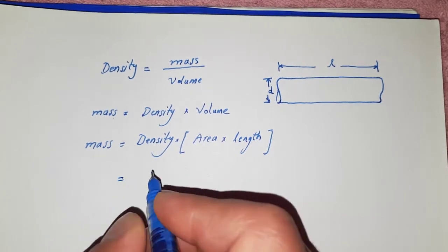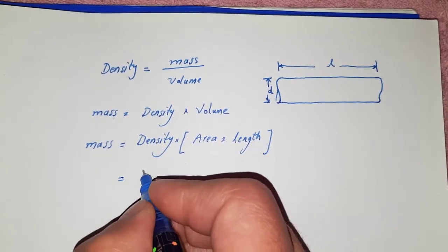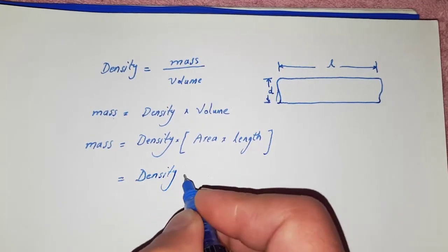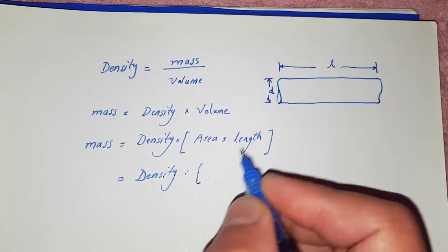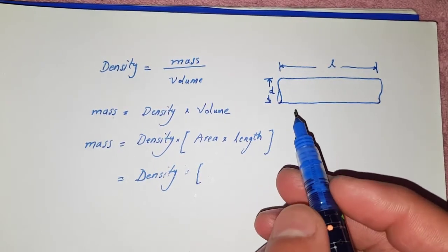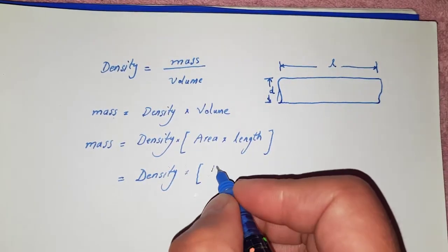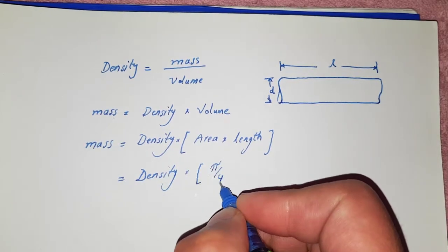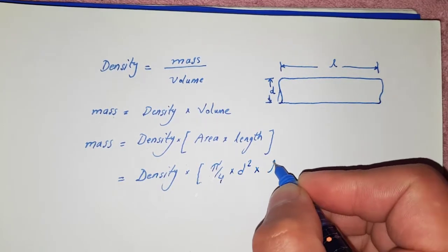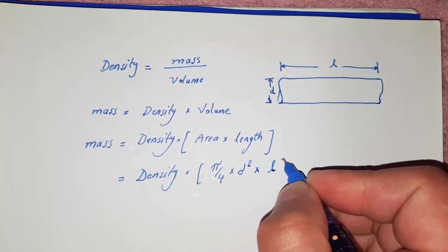Again, this mass is equal to density into area. Area of a bar - we know that the cross-sectional area of the bar is equal to pi upon 4 into d square, and into length, let's take as L.